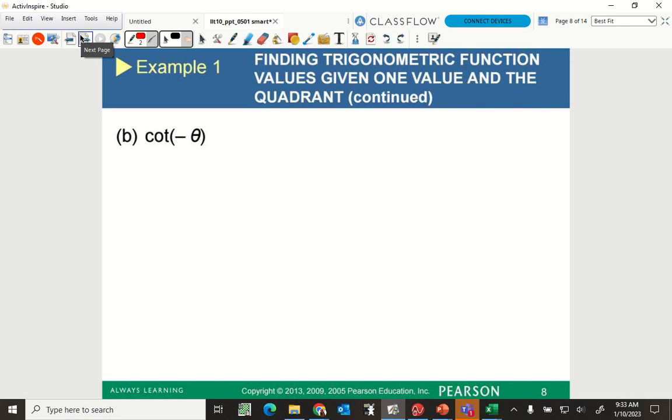All right. Cotangent of the negative angle. Hmm. So negative theta. So first, let's find where cotangent is supposed to be at. Where's cotangent supposed to be at? It is x over y. My x value. x value is negative 3. And my y value is 5.